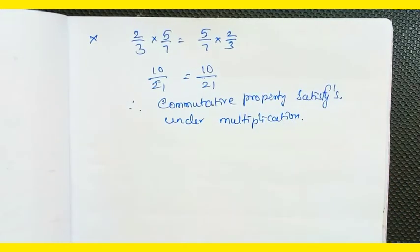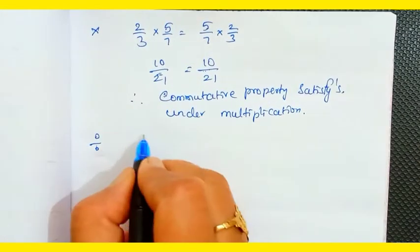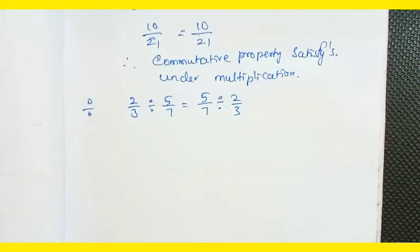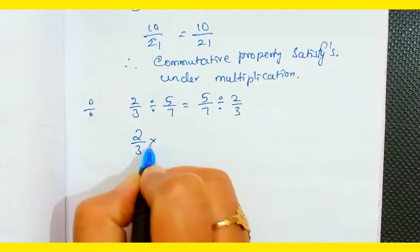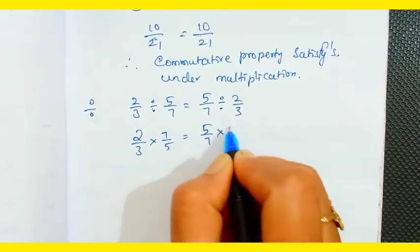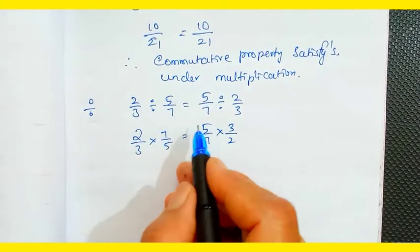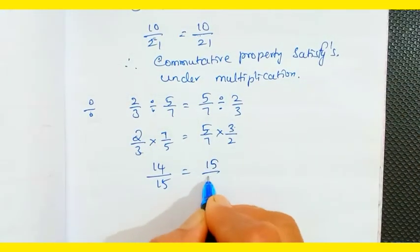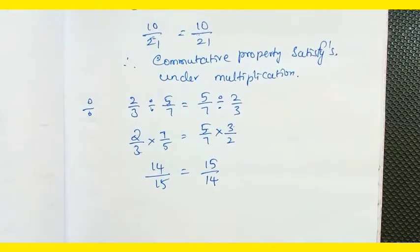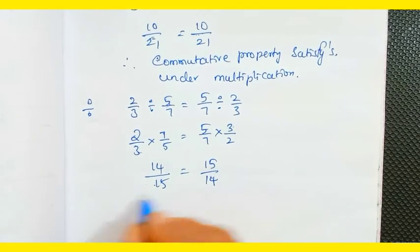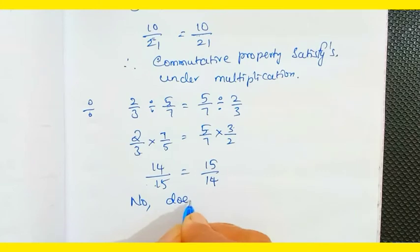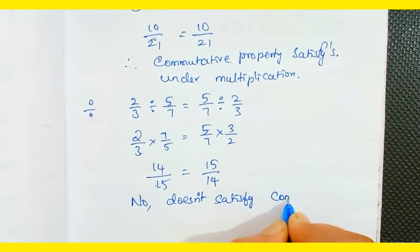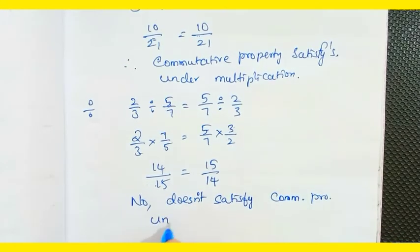For division: 2/3 ÷ 5/7 versus 5/7 ÷ 2/3. Taking reciprocals: 2/3 × 7/5 = 14/15, and 5/7 × 3/2 = 15/14. These are not equal, so the commutative property does not satisfy for rational numbers under division.